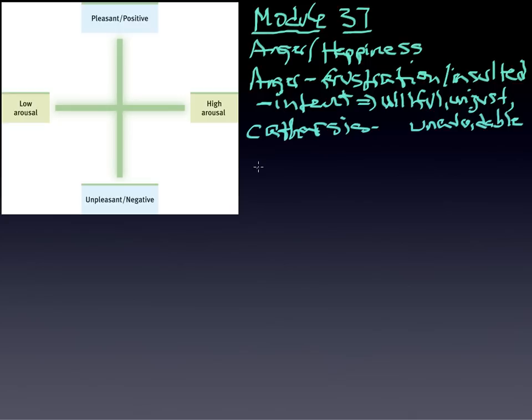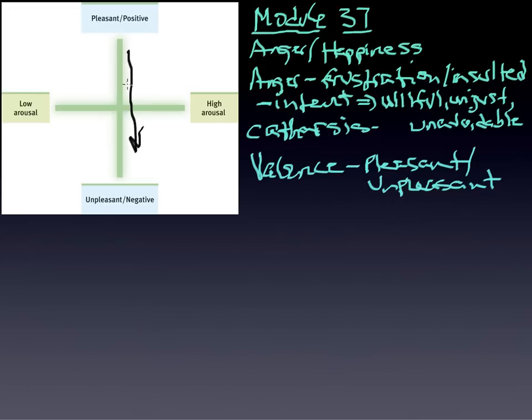One we would refer to as valence. Valence is direction, if you will, but it's pleasant versus unpleasant, or positive versus negative. And that's one dimension that runs along this particular axis here that runs up and down this way.